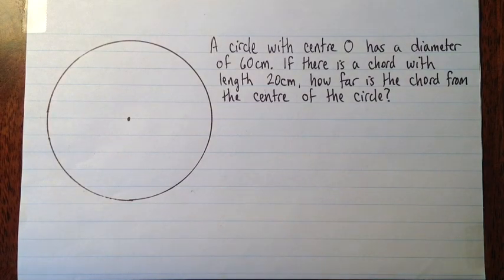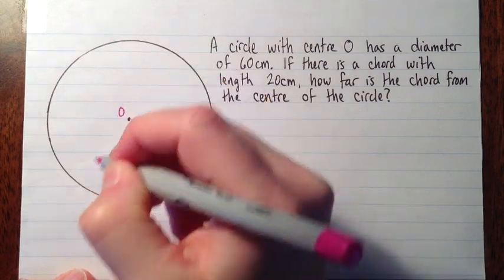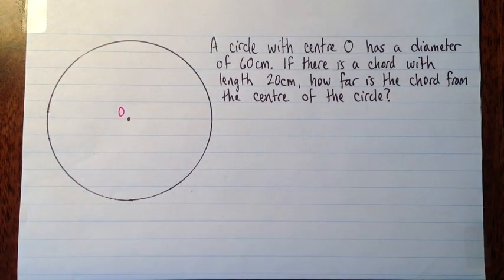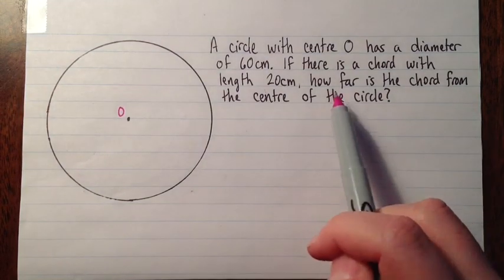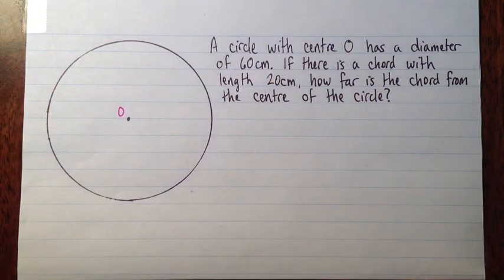So this question says that we have a circle with center O, and it has a diameter of 60 centimeters. Then it says there's a chord with a length of 20 centimeters, and our job is to find out how far the chord is from the center of the circle.